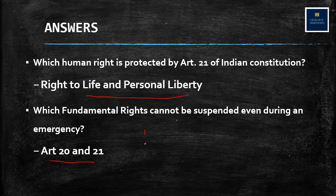Article 20 has three clauses. Clause 1 is ex post facto — there can be no law which criminalizes an offence retrospectively. Clause 2 is double jeopardy — there can be no double jeopardy, meaning you cannot be punished for the same crime twice. Clause 3 under Article 20 is the self-incrimination clause — you cannot be forced to give witness against yourself. So these are the three rights under Article 20, and along with Article 21's right to life, these cannot be suspended even during an emergency.